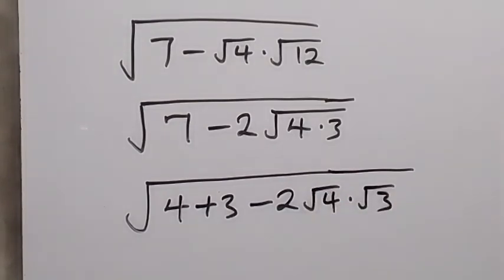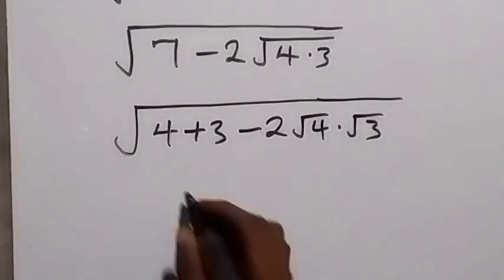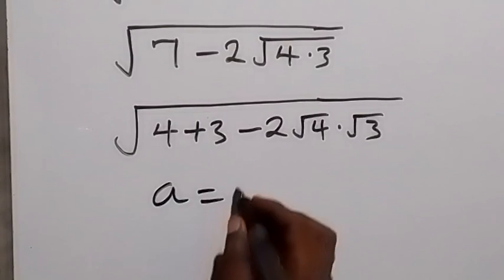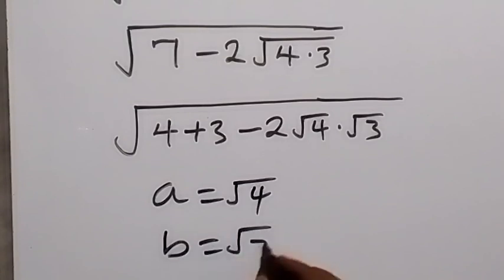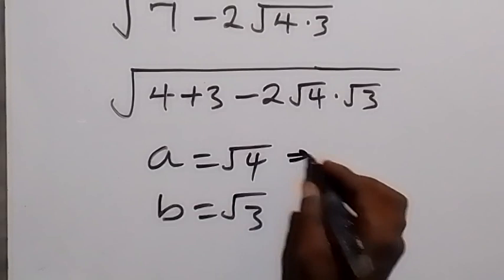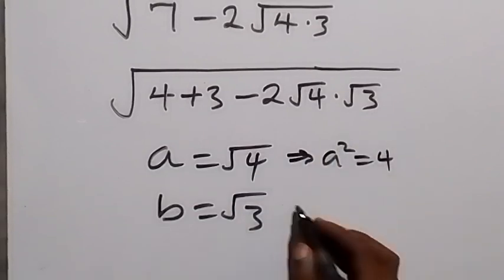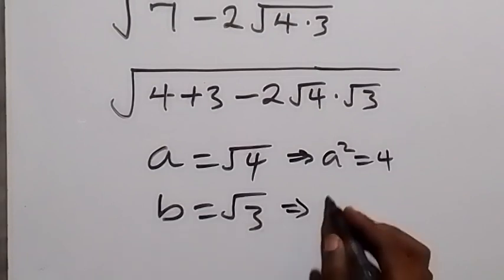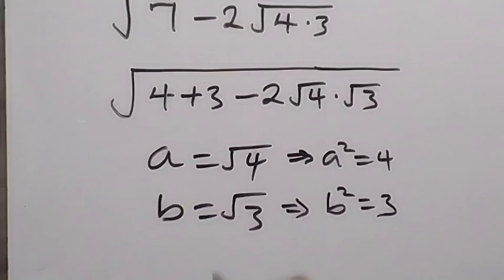From here, let's represent: let a equals √4 and b equals √3, such that when we square both sides, we have a² = 4 and b² = 3. So from here, let's replace what is inside this root in terms of a and b.